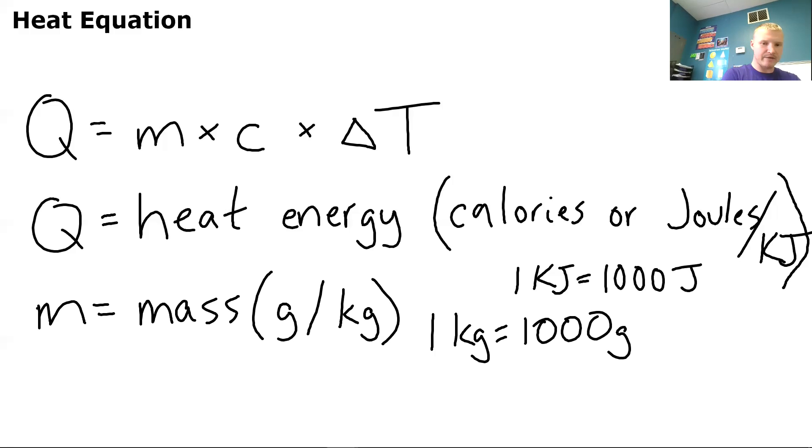And then we have the letter C. The letter C that you can see right here. So I'm going to highlight all of these a different color so we can tell what is what. So the Q is going to be our red. The M will be yellow. And our C, what does that stand for? It stands for our specific heat, specific heat capacity.